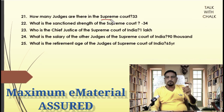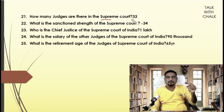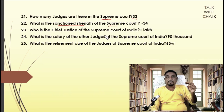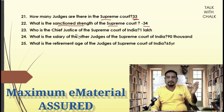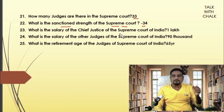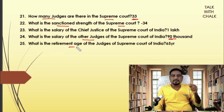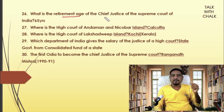How many judges are there in the Supreme Court? Currently 33. The sanctioned strength is 34. The salary of the Chief Justice of the Supreme Court is ₹1 lakh. The salary of other judges of the Supreme Court is ₹90,000. The retirement age of all Supreme Court judges, including the Chief Justice, is 65 years.